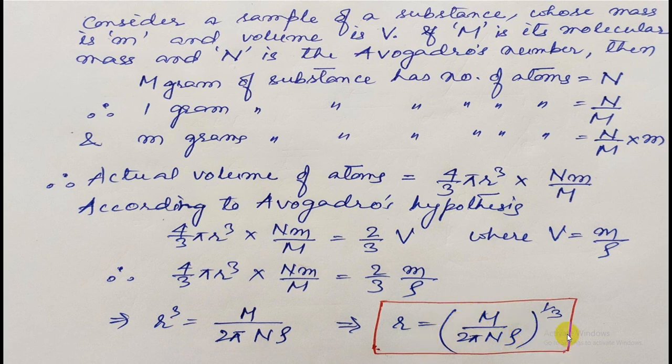We can also write it in this form as shown here in the final result. So we have seen here how indirectly we can actually calculate the value of the radius of an atom by using Avogadro's hypothesis. I hope this is clear. Any doubts you can post. Thank you.